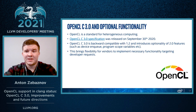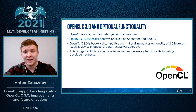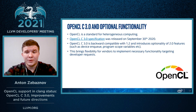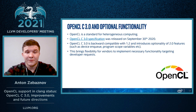OpenCL is a standard for heterogeneous computing. OpenCL C3 was released not so long ago and I've been working on its support in Clang. The new language standard is now backward compatible with 1.2 and makes 2.0 features optional, which allows vendors to port OpenCL implementations on a high variety of devices by choosing necessary functionality to implement.